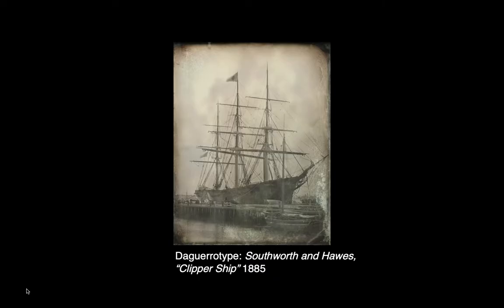This image by Southworth and Hawes, called Clippership, is a demonstration of a Daguerreotype. As you can see, it looks kind of degraded along the sides, and that's because this surface is actually metal — it's not a paper print the way that we know photographs today. The Daguerreotype was revolutionary, but it wasn't a perfect invention. Photographers would have to expose their subjects for 20 to 30 minutes so that the silver iodide would have enough time to dry, during which the subject had to remain perfectly still so that the image didn't blur. Can you imagine sitting perfectly still for 30 minutes? I certainly can't.